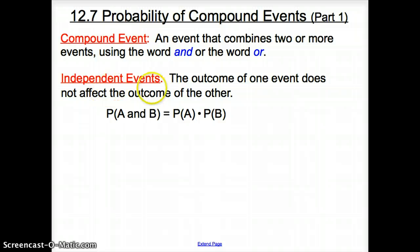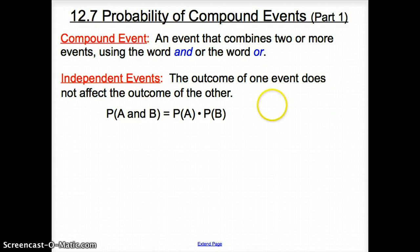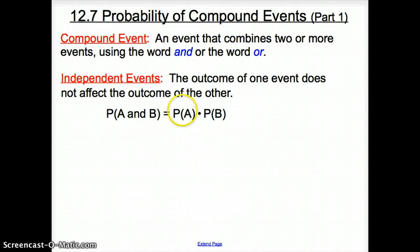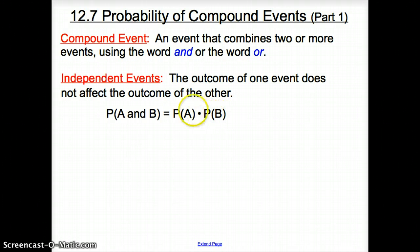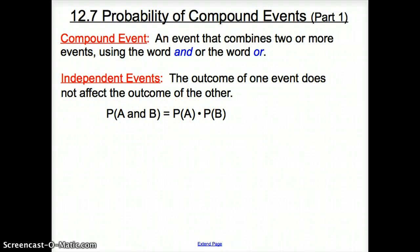The next vocab word is independent event. An independent event is when the outcome of one event does not affect the outcome of another. So if I flip a coin, that does not affect the dice that I roll next. When we have independent events, we take the probability of the first event times the probability of the second event. This is how you would write it algebraically.